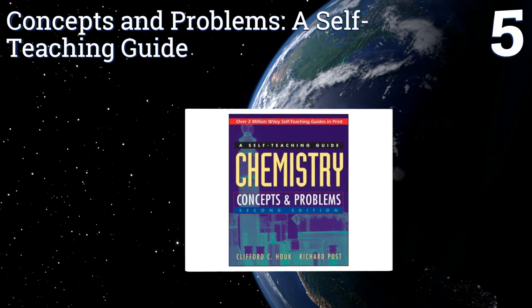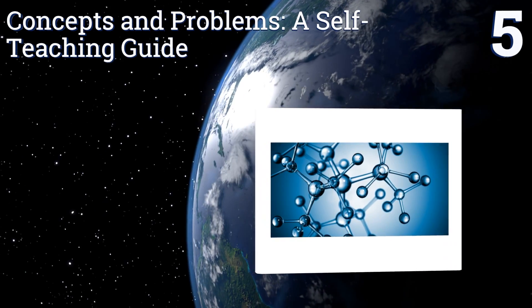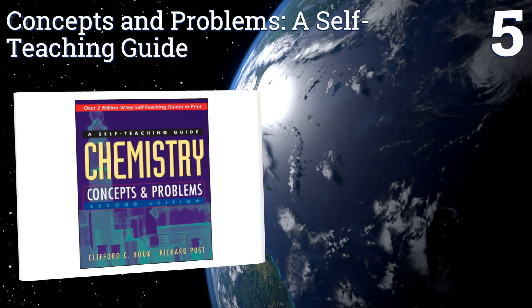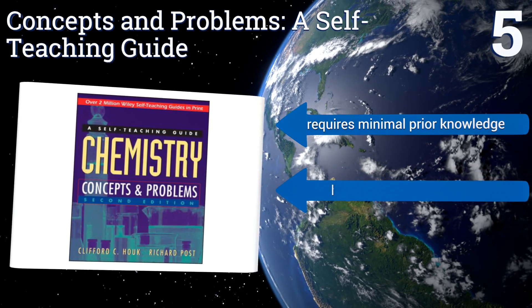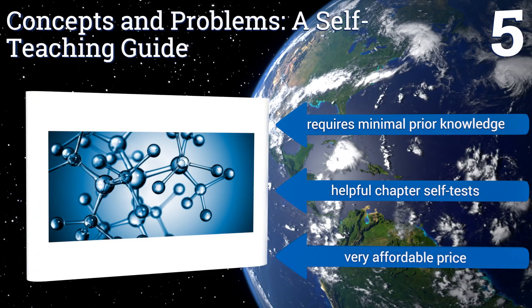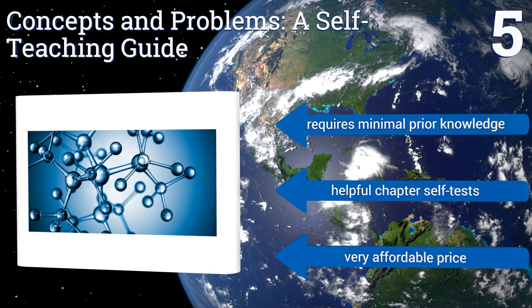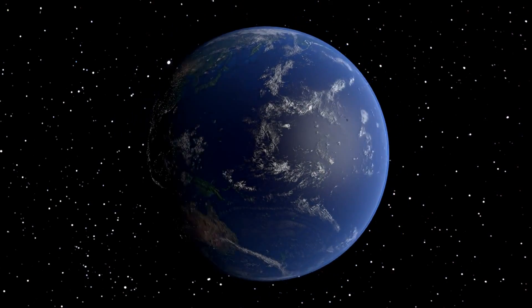Coming in at number five on our list, Howe and Post's Concepts and Problems: A Self-Teaching Guide is meant to be a supplemental volume read together with your regular chemistry books and classroom work. Its contents are intended to broaden and deepen your mastery of the subject. It requires minimal prior knowledge and includes helpful chapter self-tests. It's very affordably priced too.